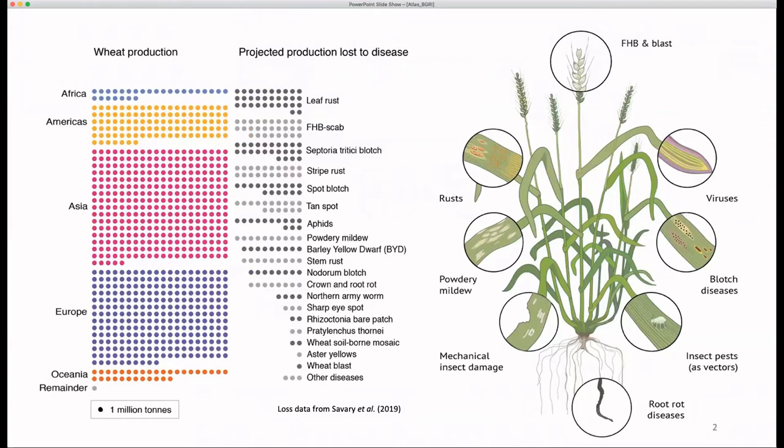Given the current wheat yields, this can be projected to 209 million tonnes of wheat that we could have in the absence of these diseases. One way to recapture this lost yield would be to have an arsenal of characterised resistance genes to target these.